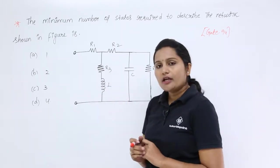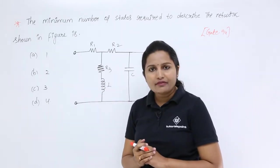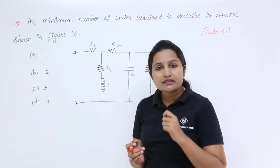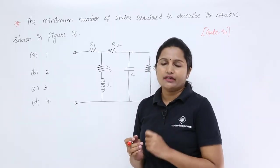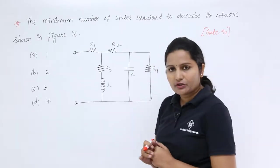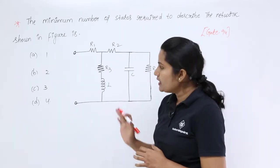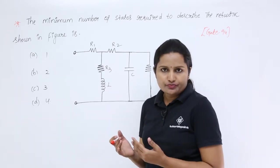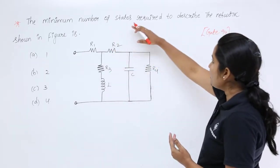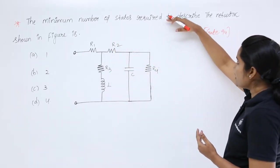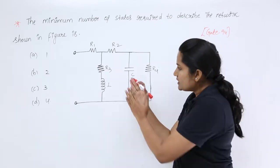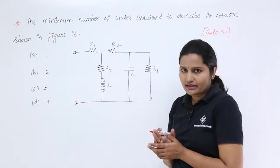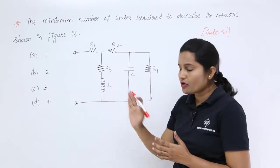The shortcut is: the number of states equals the number of memory elements. If you see any network having n number of memory elements, it will take n states to describe that network. So to describe the total network, how many states it requires means we count the number of memory elements.